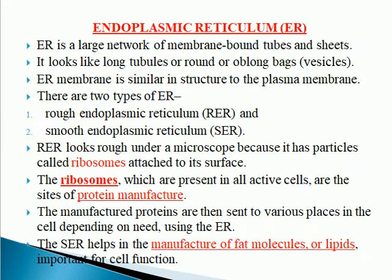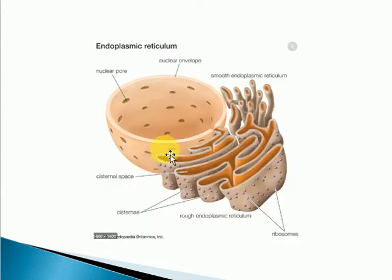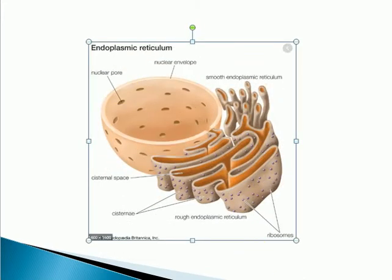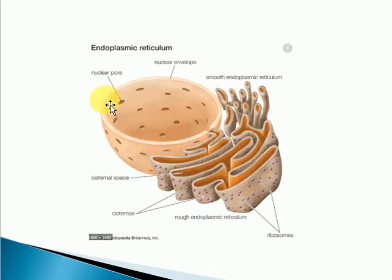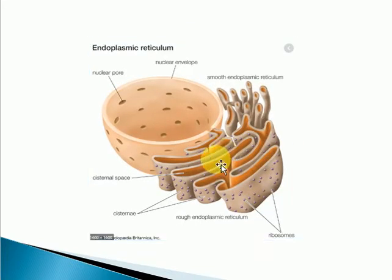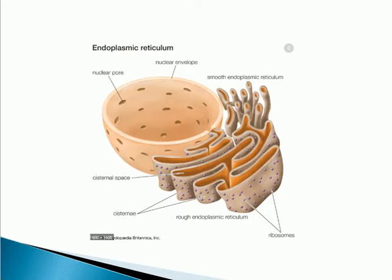We will continue with the next topic: the endoplasmic reticulum. What exactly is the endoplasmic reticulum? It is the network of membrane-bound tubes and sheets. Looking at this diagram, we can see the nucleus and connected to it are different cistern-shaped structures. This is called the endoplasmic reticulum. Here you can see the rough endoplasmic reticulum as well as the smooth endoplasmic reticulum.